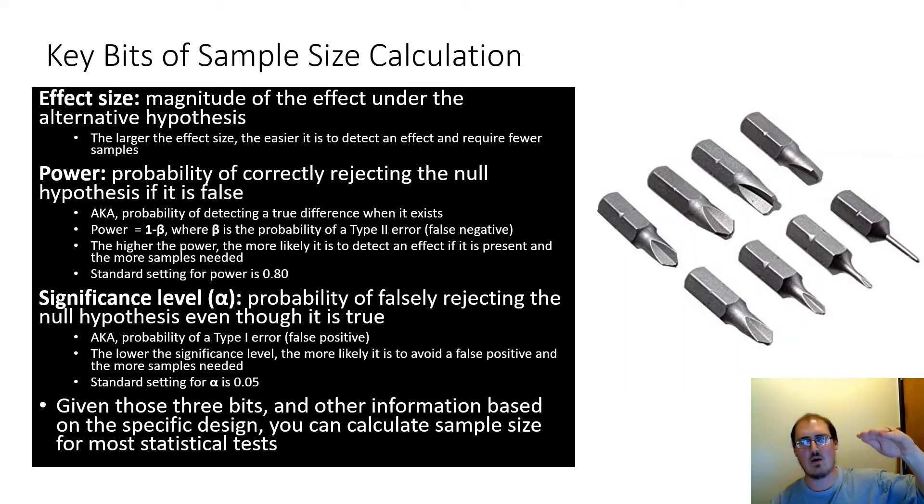So higher power, more samples. Lower significance level, more samples. And for alpha, the significance level, the standard setting is 0.05, which we'll use as well.